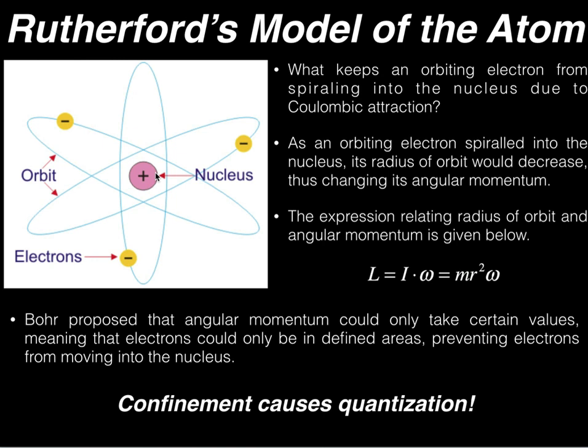If we look at the formula for angular momentum L, it's equal to the moment of inertia of the particle times its angular velocity, and this is equal to mr²ω. We notice that angular momentum is a function of the radius.